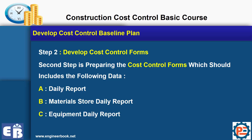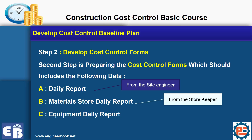What else do we need to develop? Step number two — yes, we need to develop the forms. According to our scenario and case study, we developed three reports. In your real projects, you may split these three reports into five, or combine them into two. It all depends on your scope of work and site conditions. But if you understand the concept, it will be very easy to modify later on. We need a daily report from the site engineers, a material stores daily report from the storekeeper, and an equipment daily report from the equipment supervisor.